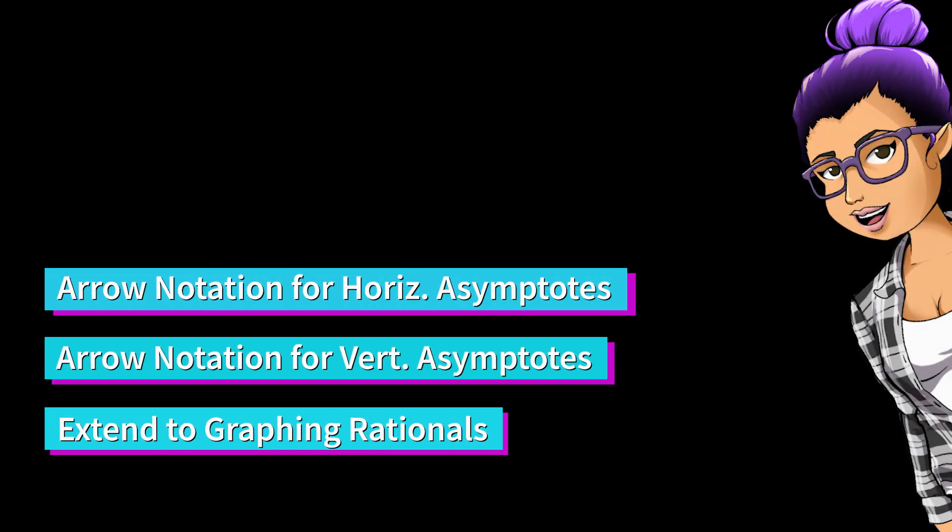You can now use arrow notation to describe the asymptotes of rational functions. We can extend this knowledge to when we want to graph rational functions.